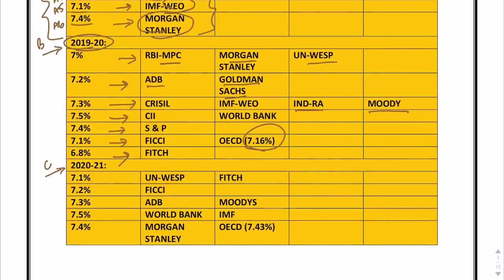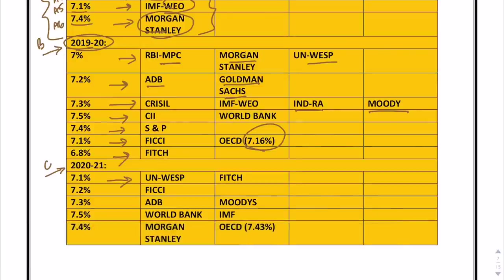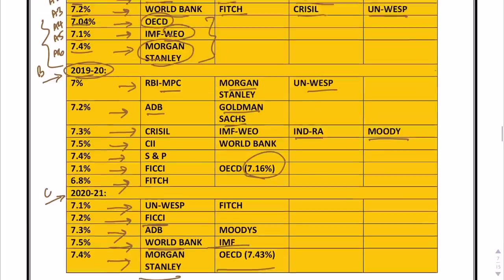For 2020-2021, forecasts are given by fewer organizations: 7.1% by two, 7.3% by two, 7.5% by two organizations, 7.4% by Morgan Stanley and OECD, and finally 7.2% only by FICCI.